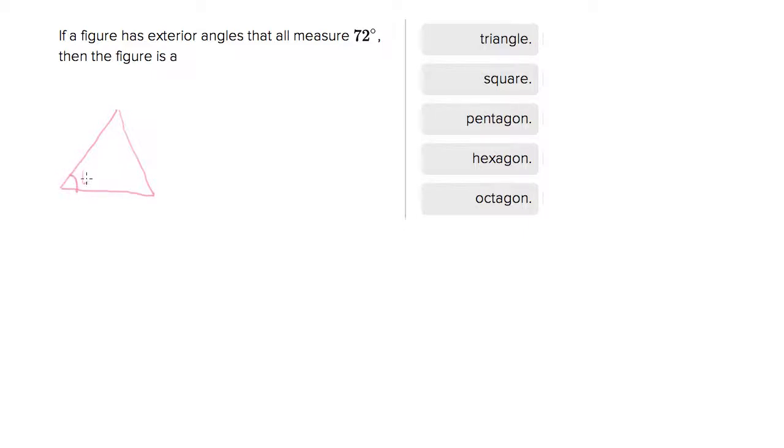So these angles, the ones that you're used to measuring, suppose this is an equilateral triangle, those are interior angles. An exterior angle is what you get if you continue these lines and you measure outside. So exterior angles on an equilateral triangle measure 120.